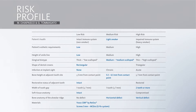She is a light smoker. The patient's aesthetic requirements are low because we have to restore the posterior mandible on both sides. The height of smile line is low. There is a medium scalloped gingival biotype. The shape of dental crown series is rectangular. There is no infection on the remaining dentition. The bone height at the adjacent tooth site is favorable. Soft tissue anatomy is intact.